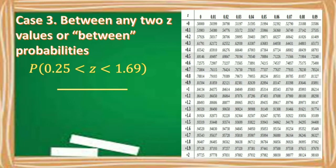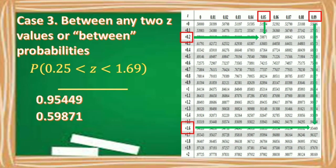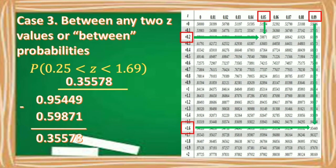Look up the area for Z-score 0.25, which is 0.59871, and the area for Z-score 1.69, which is 0.95449. Subtract the lesser value from the greater: 0.95449 minus 0.59871 equals 0.35578. Therefore, the area of the Z-score greater than 0.25 but less than 1.69 is 0.35578.